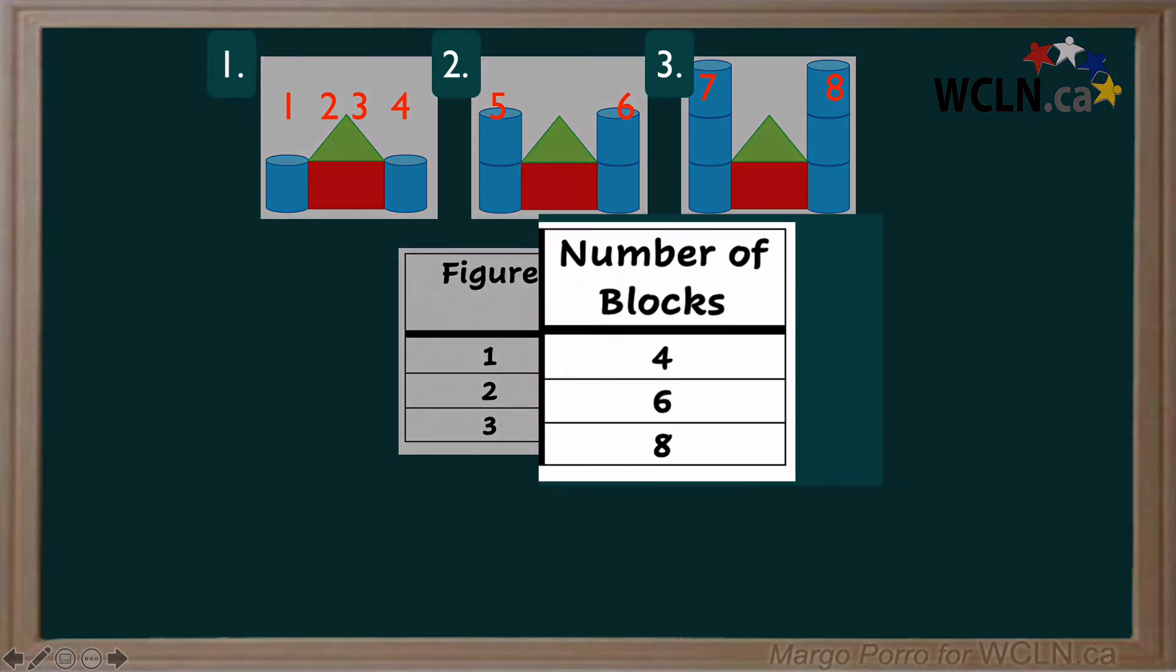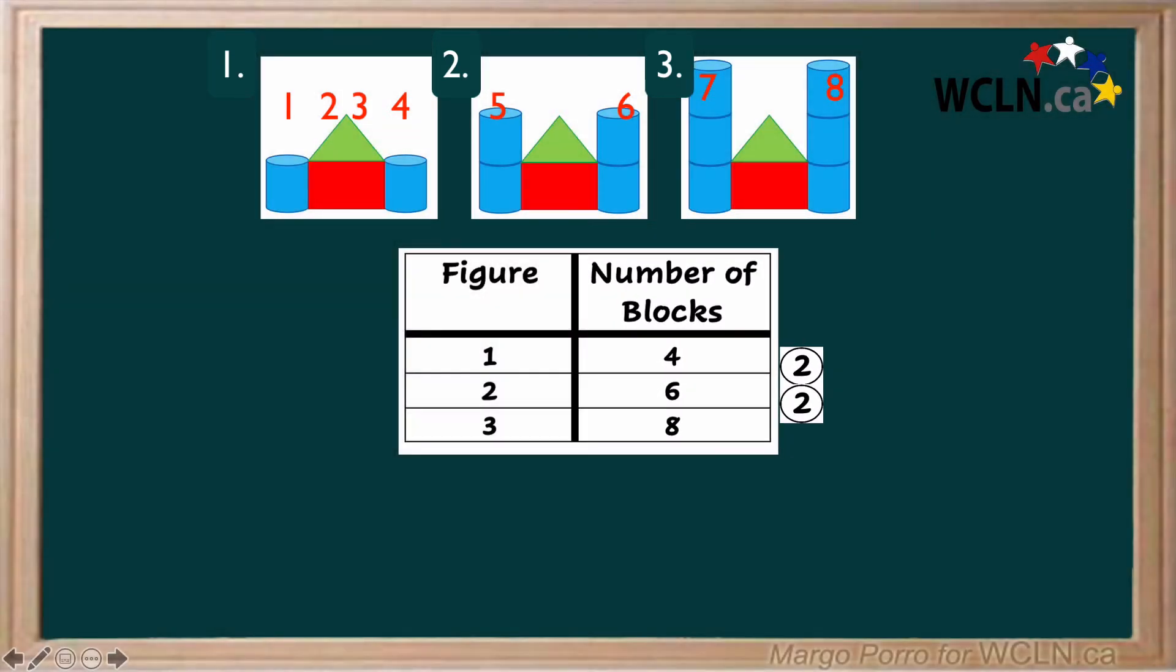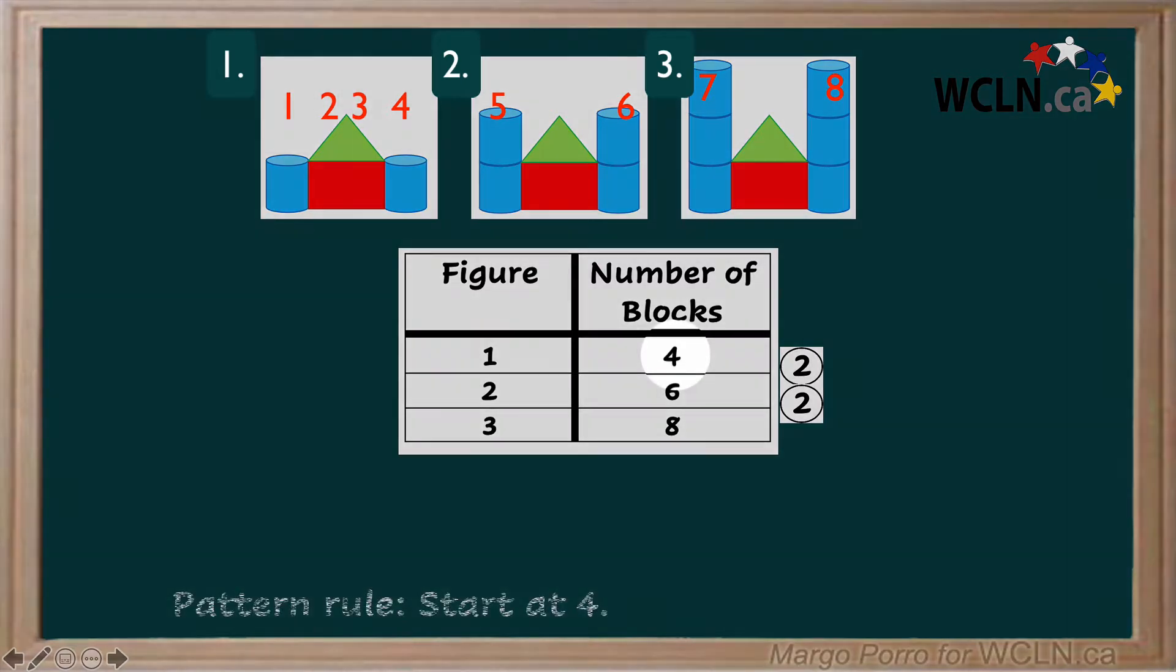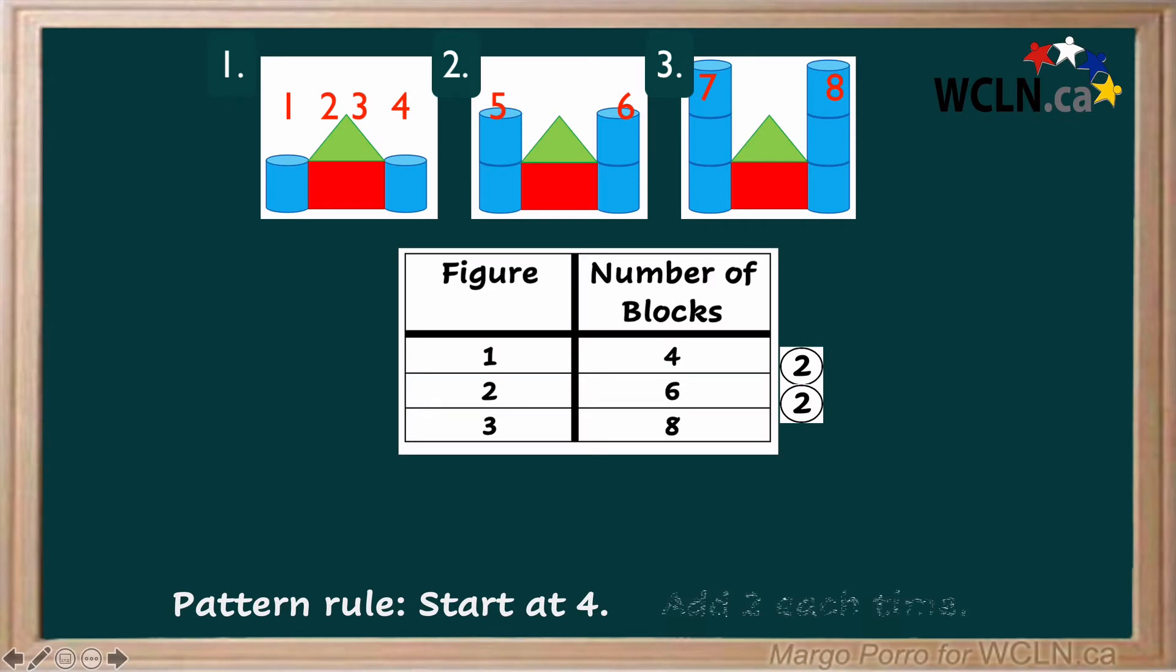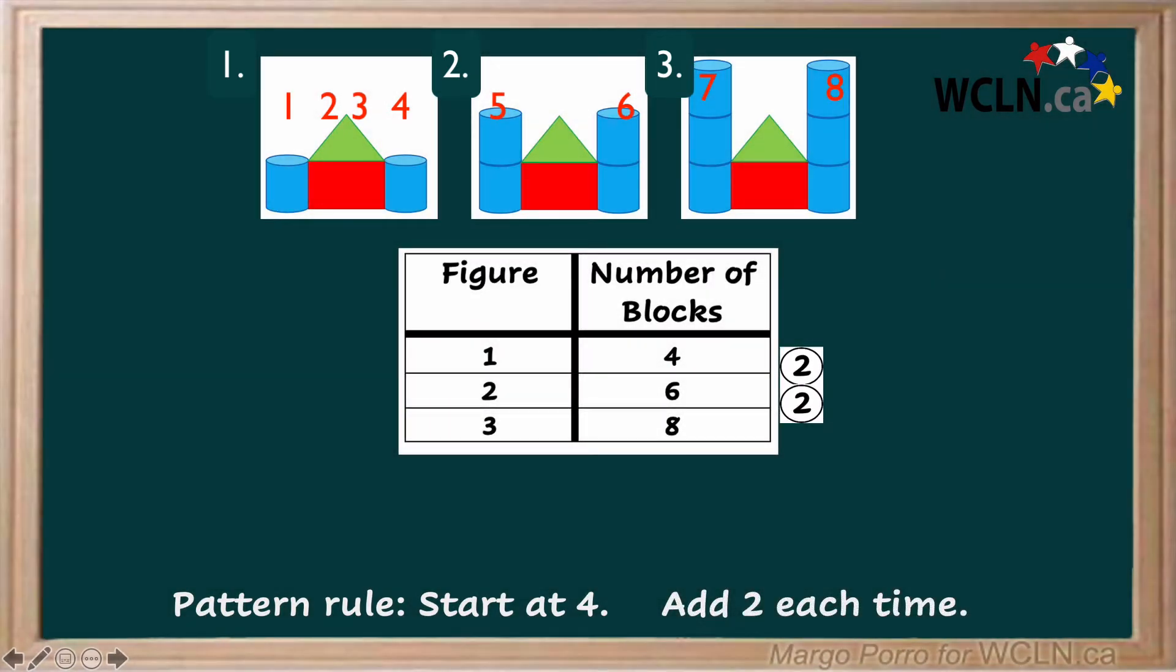Each stage of the castle construction uses two more blocks than the stage before it. You've learned how to state rules for patterns. What is the rule for the pattern in the number of blocks on this table? Start at four. Add two each time. Remember we always put the starting number as well as what happens from there.